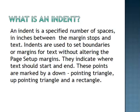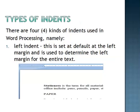These points are marked by a downward-pointing triangle, an upward-pointing triangle, and a rectangle — all of the visuals I just explained before. Now we're going to look at the various types of indents.